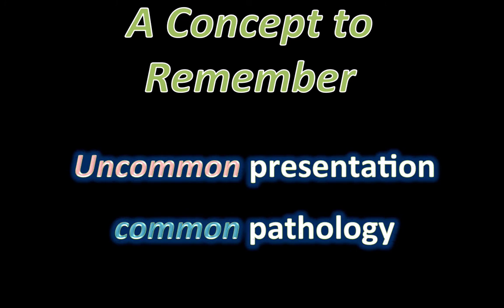An important concept to remember, whether you're dealing with entities in real life or in an exam setting, is that it's always very common to see uncommon presentations of common pathologies. Knowing that small bowel adenocarcinoma is relatively common is important, but knowing that it could produce aneurysmal dilatation similar to what lymphoma does is also important.